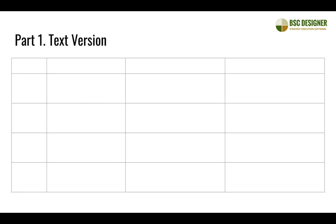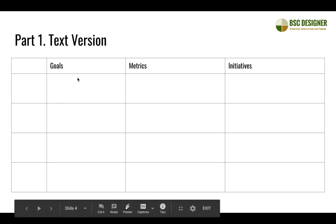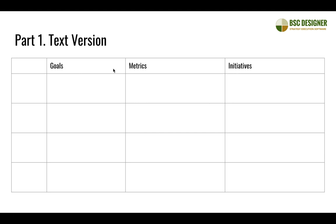Let's start with the text version of a strategy map diagram. You can do it in any presentation software — for example, I'm using Google Slides, but you can also use Keynote on Mac or PowerPoint on Windows. It's really easy, and this is the version of a strategy map diagram you'd find in most books on the topic.